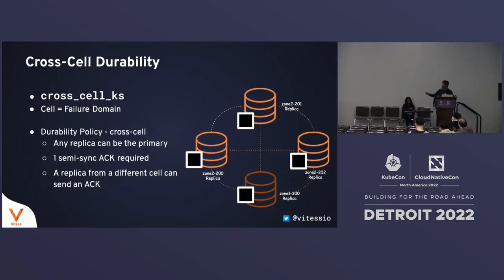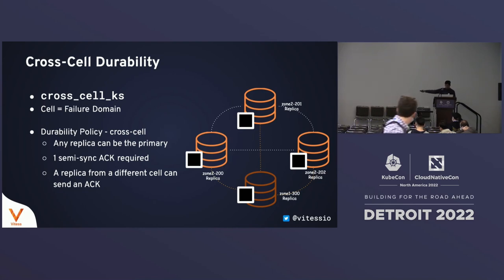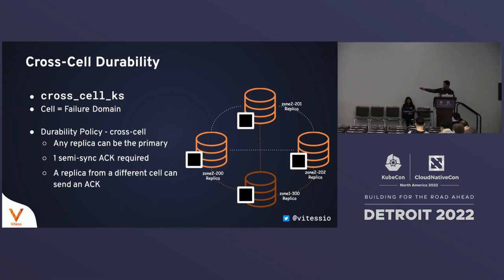The next example is the CrossCell durability policy, which is similar to the SemiSync policy with one difference. A cell is defined as a failure domain — it could be an AWS region, or even different cloud providers (e.g., AWS is one zone and GCP is another). With CrossCell durability, the replica ACKs must come from a tablet in a different cell. So when a primary accepts a write, the semi-sync ACK comes from a different cell, guaranteeing your write is persisted in two cells. In our example, we have four tablets: three in zone two and one in zone one. The yellow lines show who can send semi-sync ACKs — the zone-one tablet can send to and receive from all three others, but zone two tablets cannot send ACKs to each other.